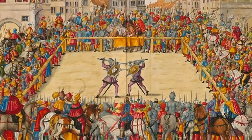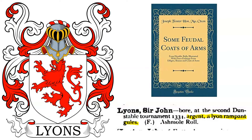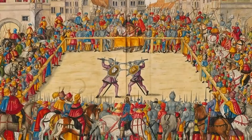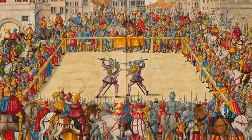Here we see an example of a tournament. The Dunstable Tournament of 1334 was the actual second one. What would happen at a tournament is jousting, melees, and other fights and feats of arms from knights who were invited from different areas.